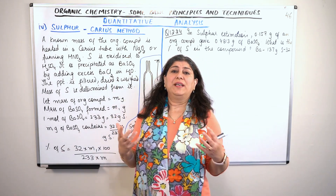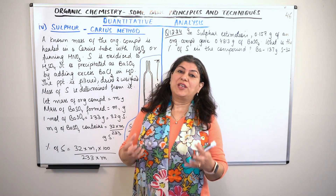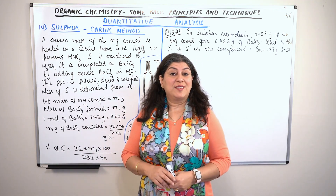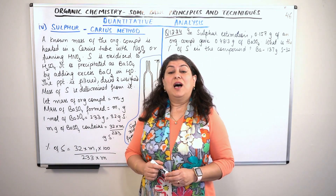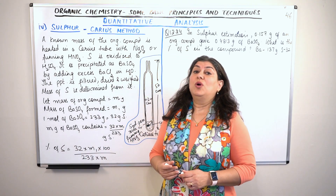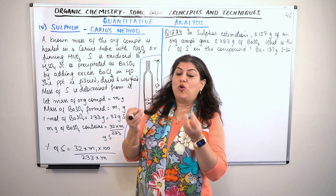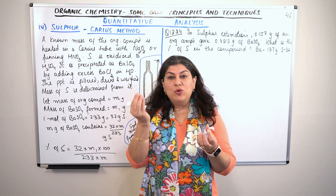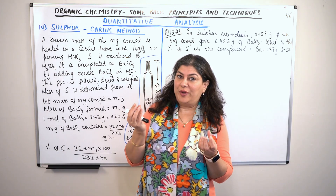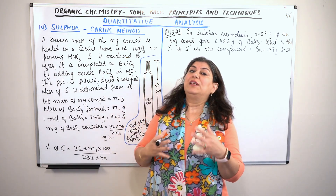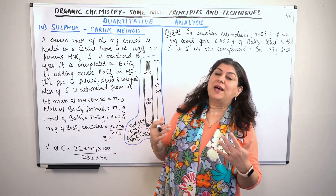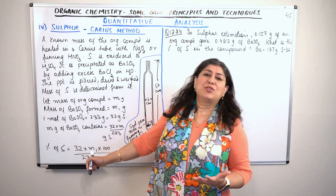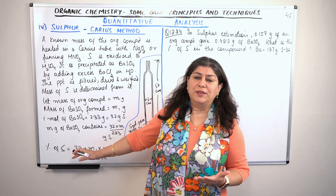How do we find out the quantity of sulfur? Once we have determined that the compound has sulfur in it, how do we come to know how much sulfur is present in the given quantity of the organic compound? From that we will calculate the mass percentage of sulfur in the compound, just as we have been doing for other elements.